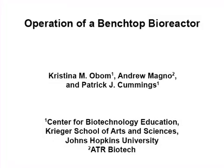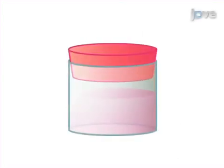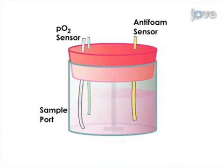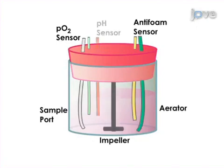The overall goal of this procedure is to set up a bioreactor that will provide a controlled environment for large-scale growth of bioengineered cells. This is accomplished by first assembling the vessel, calibrating the pH probe, and autoclaving the assembled vessel.